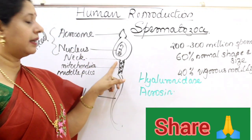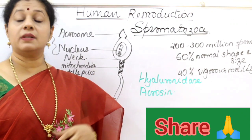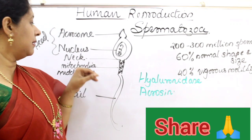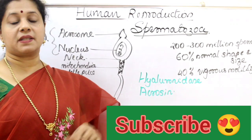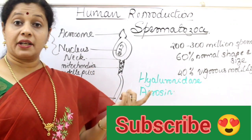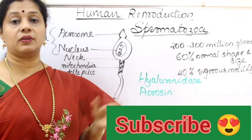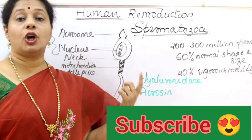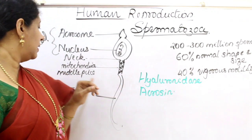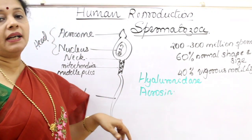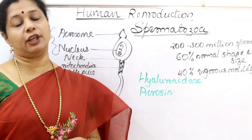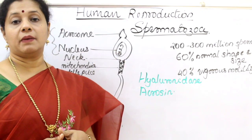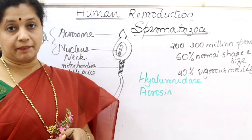In the neck region, there is a centriole which will later help in the cleavage of the zygote. Mitochondria are also present in the neck region — mitochondria is the powerhouse of the cell, so it serves as the powerhouse of the sperm since sperms need a lot of energy for movement. Finally, the tail helps in the vigorous motility of the sperms. These are the basic parts of the human sperm or spermatozoa.